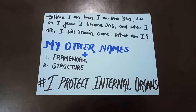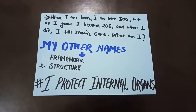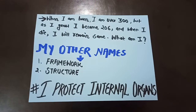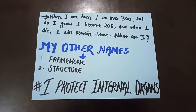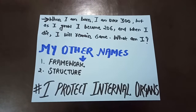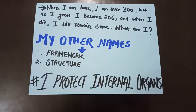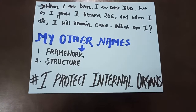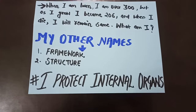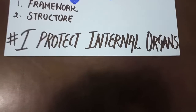We won't study much about this chapter today. Instead, I'd like to ask you a few questions, and you all will reveal the name of the chapter by yourselves. Here's a riddle for you: when I'm born I am over 300, but as I grow I become 206, and when I die I will remain the same — what am I? For a hint, there are two different names: 'framework' and 'structure.' One more hint: it also protects your internal organs.